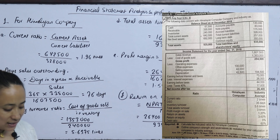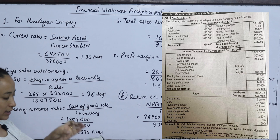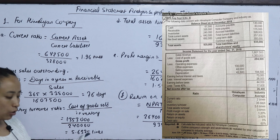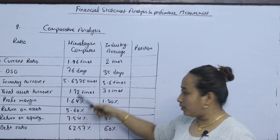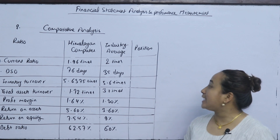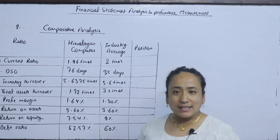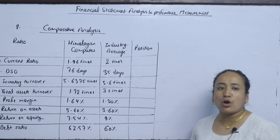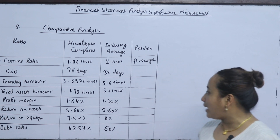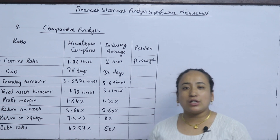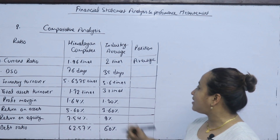Now we analyze the company's strengths and weaknesses as revealed by our calculations compared to the industry average. We will make a comparative analysis table with industry average alongside the Himalayan Computer Company data. The current ratio is 1.96 times. DSO is 35 days.